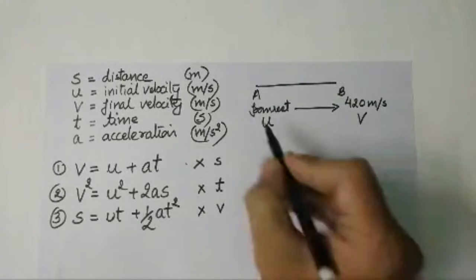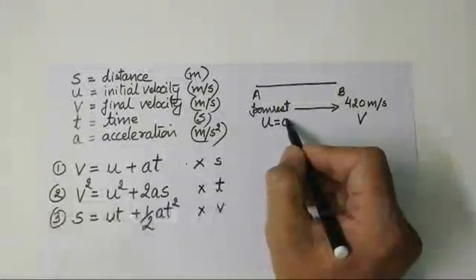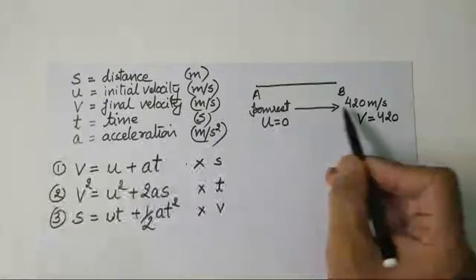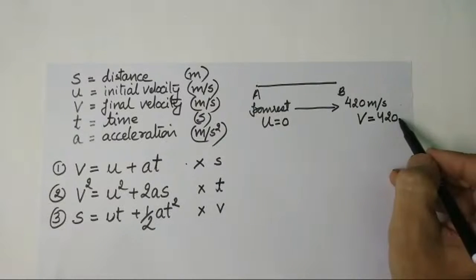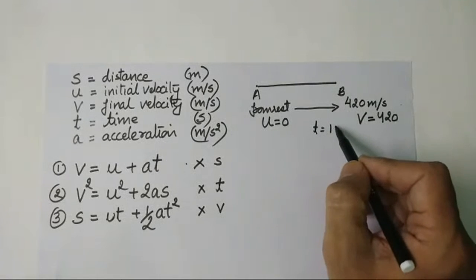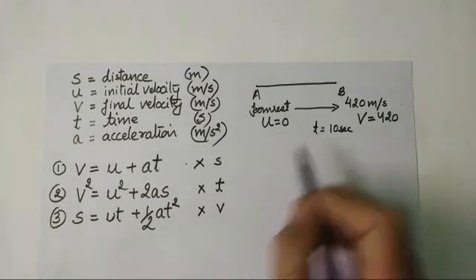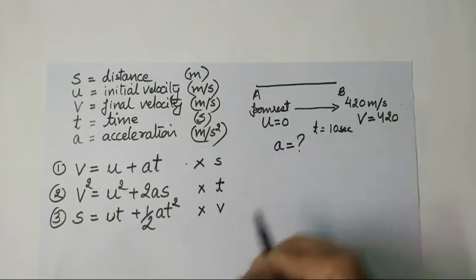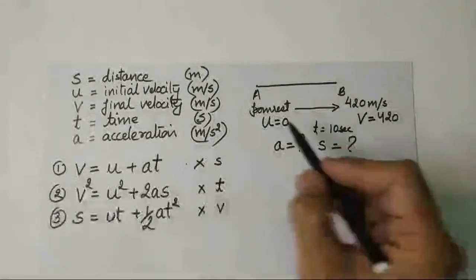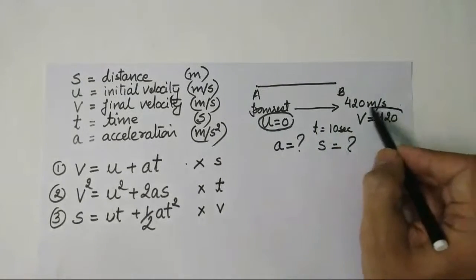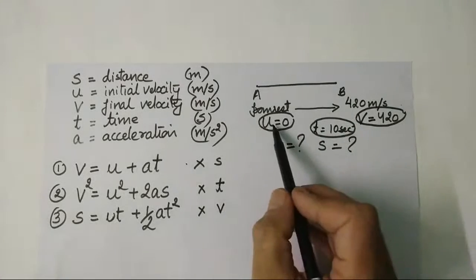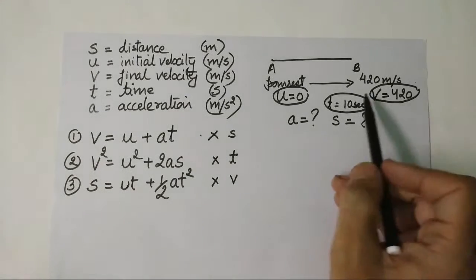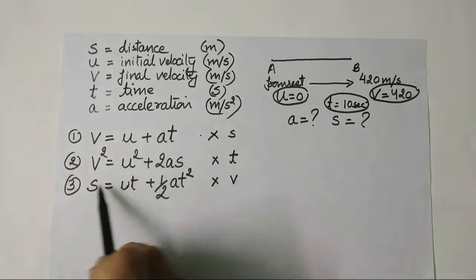The train starts from rest, so u equals 0, and attains a speed v equals 420 meters per second in a time of 10 seconds. We need to calculate the distance traveled. So u is given, v is given, and t is given. We need to find acceleration a first, then distance s.